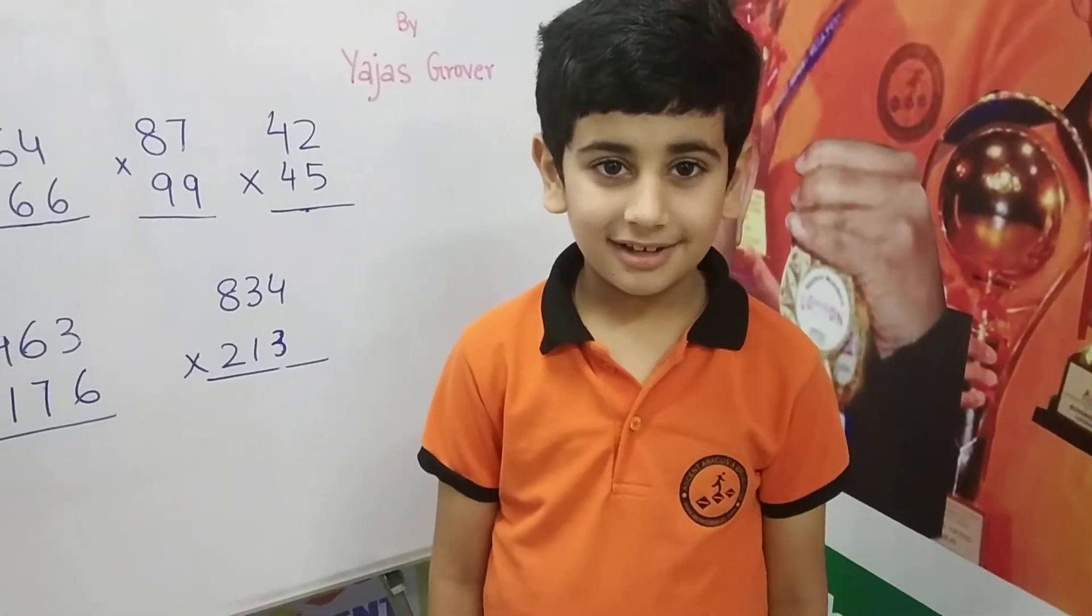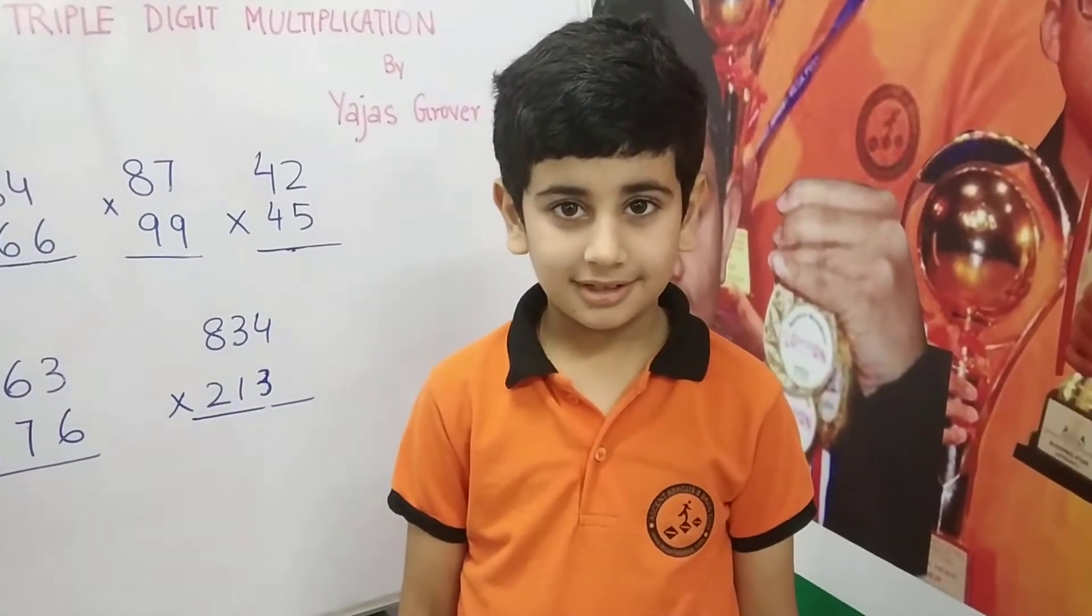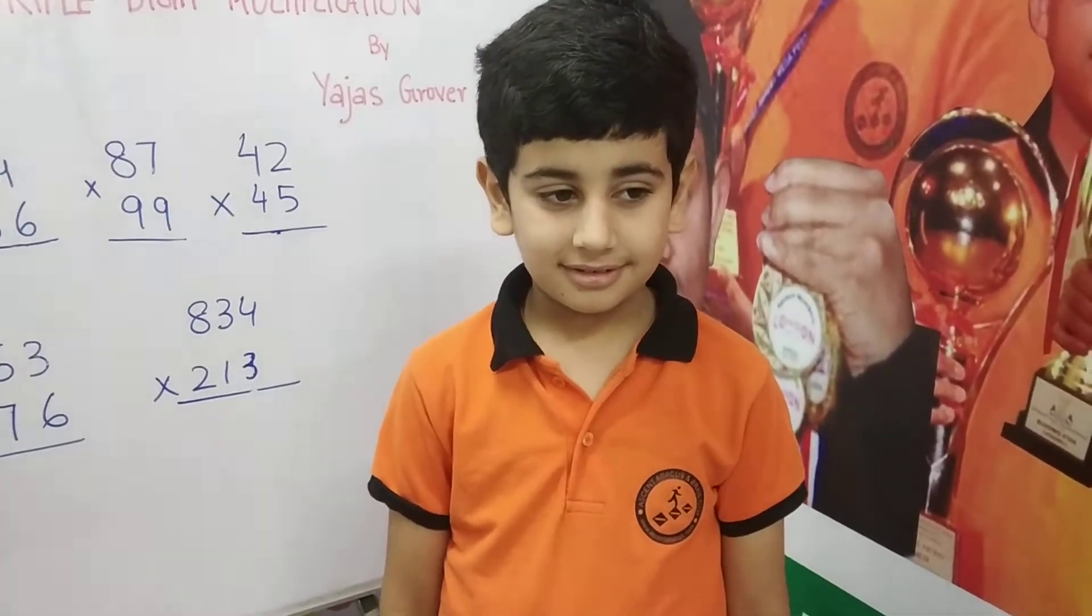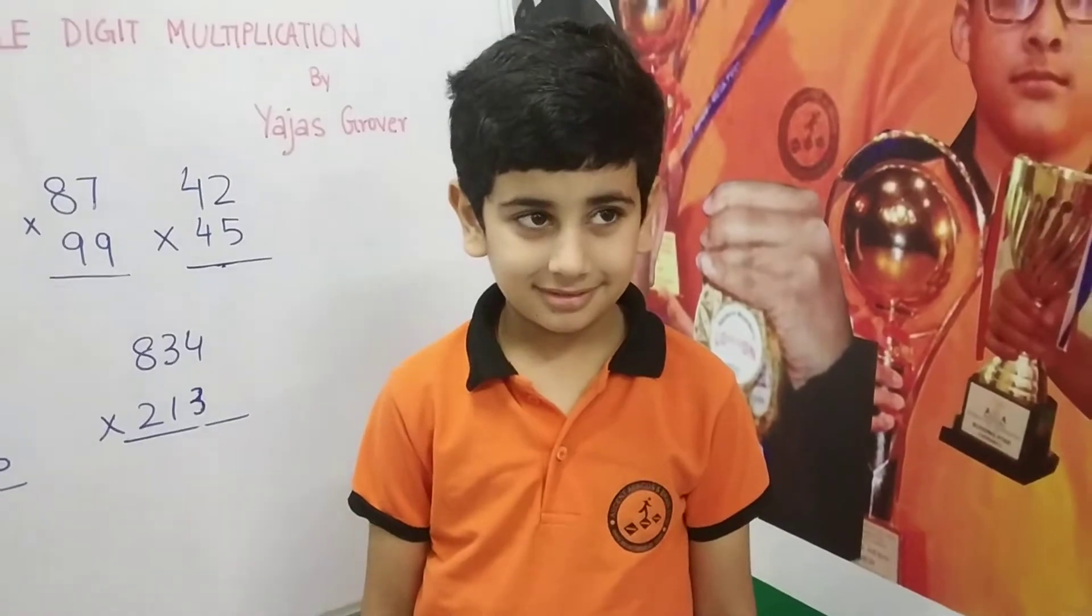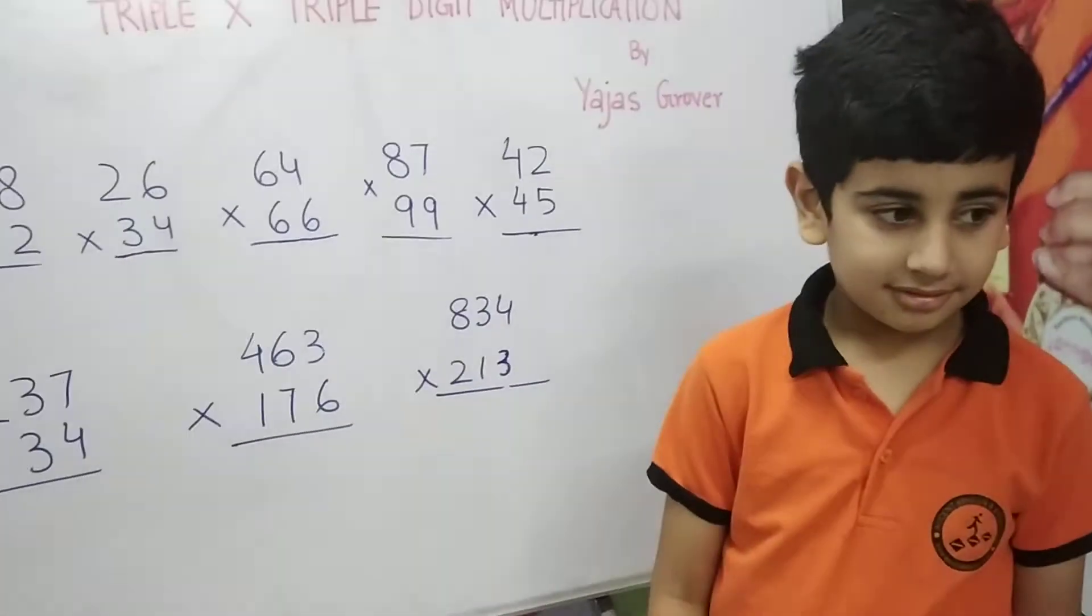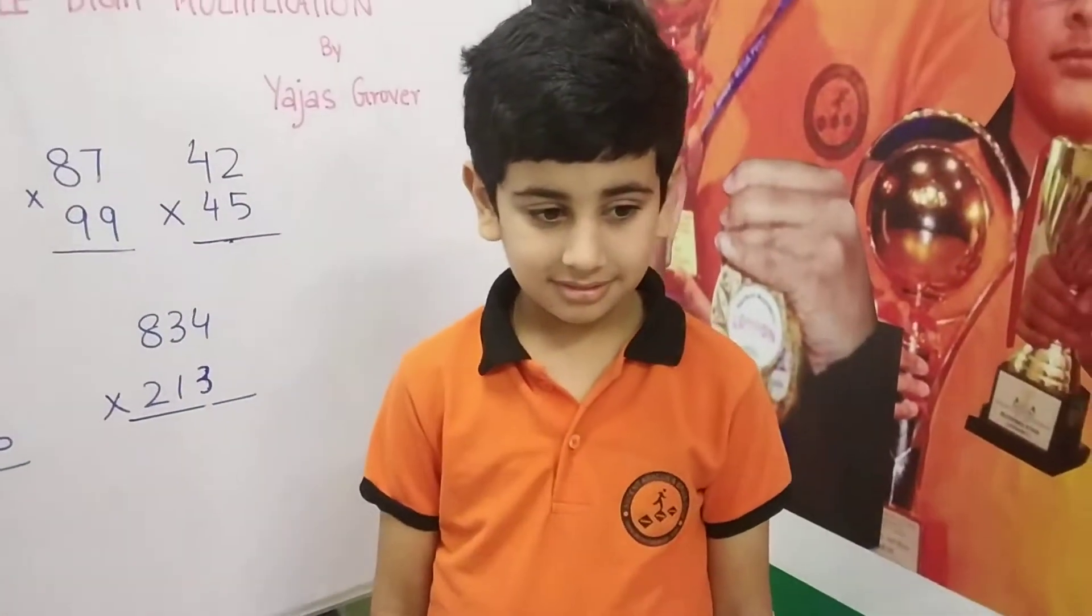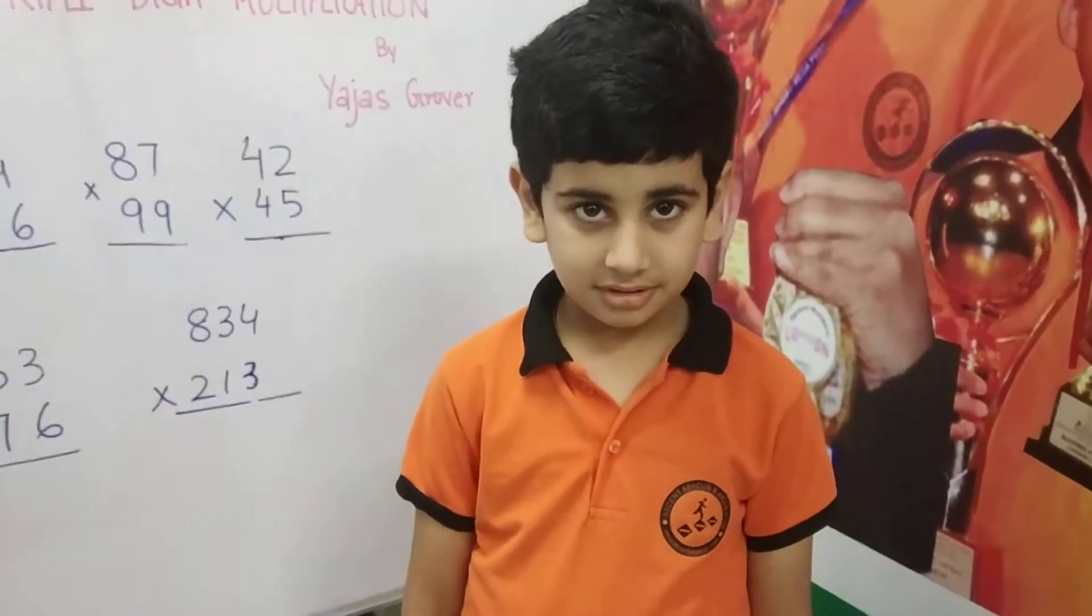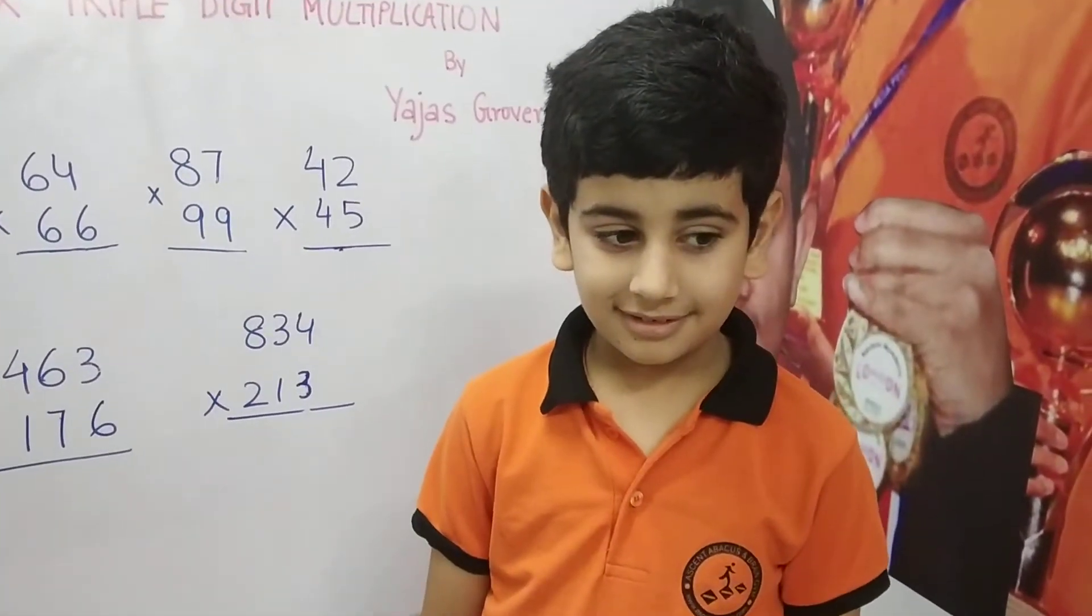He is in class 3 right now. In his previous videos, he has shown proficiency in double-digit calculations and triple-digit calculations also. When he started his journey two years back, and now when he is in class 3, he has gotten proficient in double-digit multiplications and he is moving on to triple-digit multiplications. Today he is going to show this skill which he has learned. This is how he goes.